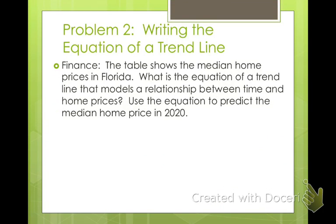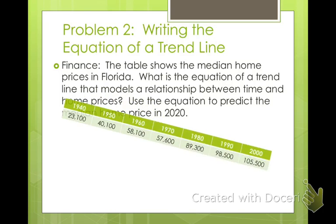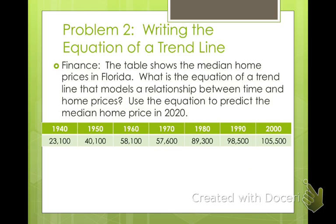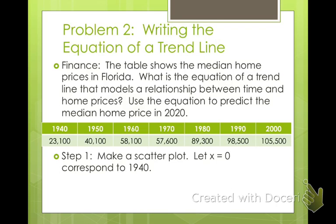So, writing a trend line. We have a table that shows the price of homes in Florida over time. We need to write an equation that models this and predict how much a home will cost in 2020 if this general rule stays the same. We're going to make a scatter plot. We're going to start by letting x equals zero be our first data, 1940. Then we're going to sketch a trend line. Why don't you go ahead and pause it and see what you do, and then I'll throw one up here really quick.